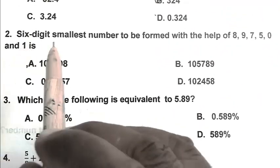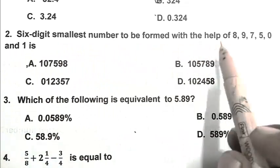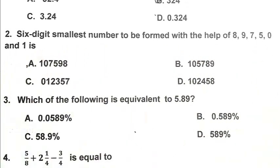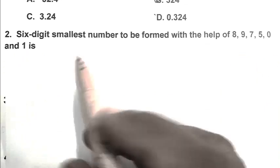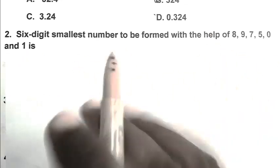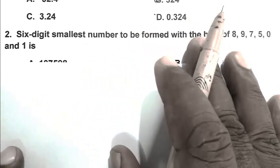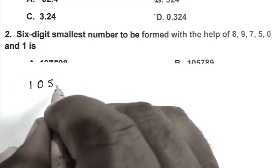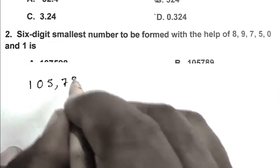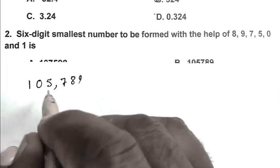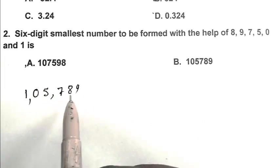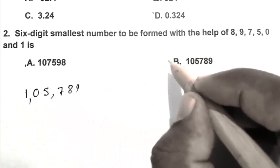Question number 2: Six-digit smallest number to be formed with the help of 8, 9, 7, 5, 0 and 1. We have to write the smallest 6 digit number by arranging smallest digits first: 1, 0, 5, 7, 8, 9. So the number is 105789. B is the right answer.